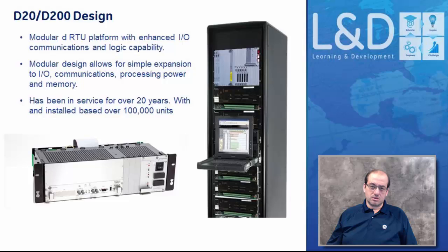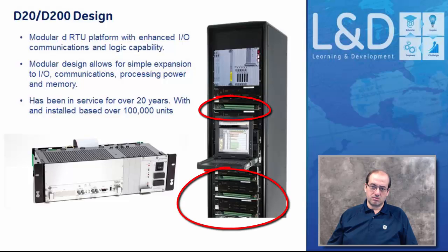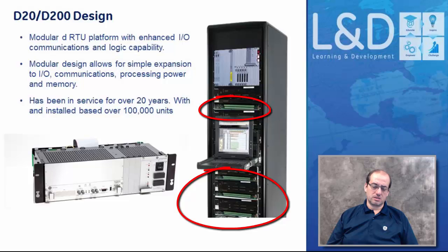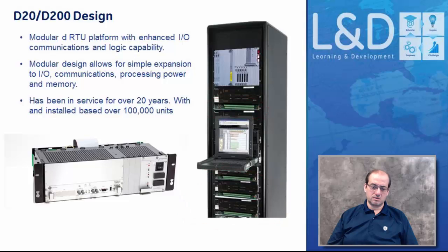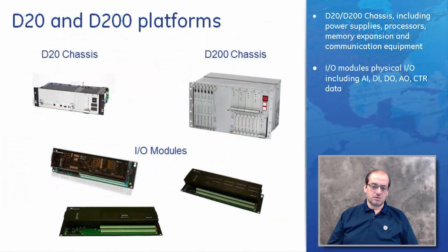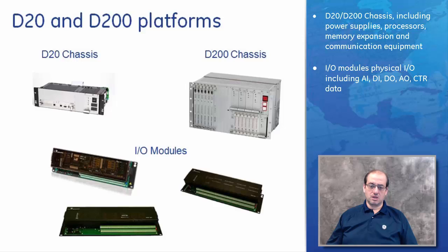The D20 is a modular design that allows for simple expansion of I/O cards. You can have as many I/O cards as required to collect data from the substation. These I/O cards are wired directly to a marshaling cabinet or directly to a transducer or sensor in close proximity. The main components are the D20 chassis — horizontal or vertical — and I/O cards, which can be digital I/O, analog I/O, digital output, or combination cards with digital input, digital output, and analog inputs.